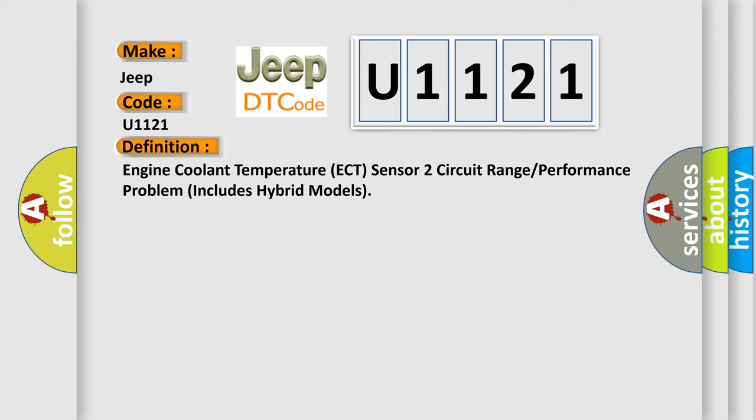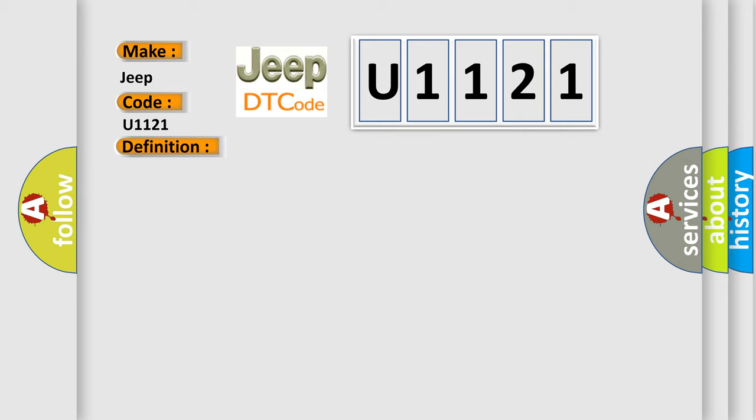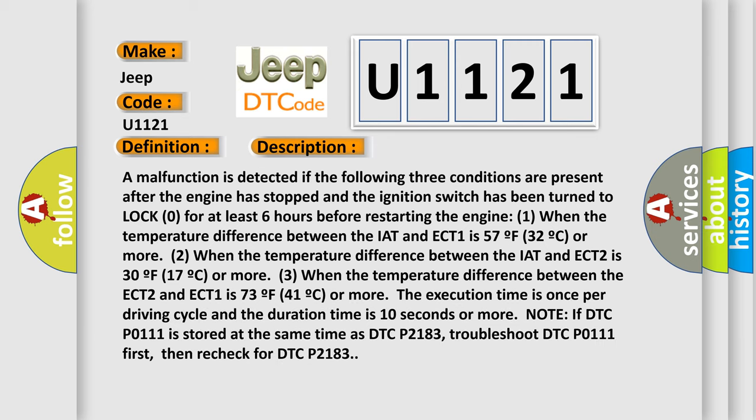Here is a short description of this DTC code. A malfunction is detected if the following three conditions are present after the engine has stopped and the ignition switch has been turned to lock zero for at least six hours before restarting: one — when the temperature difference between the IAT and ECT1 is 57°F (32°C) or more; two — when the temperature difference between the IAT and ECT2 is 30°F (17°C) or more; three — when the temperature difference between ECT2 and ECT1 is 73°F (41°C) or more. The execution time is once per driving cycle and the duration time is 10 seconds or more.